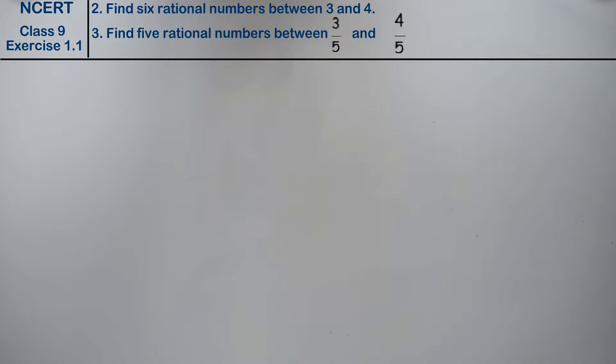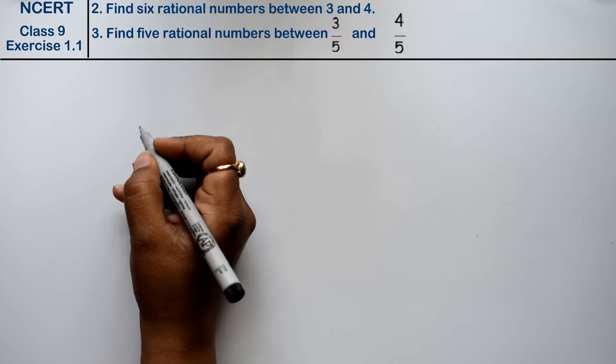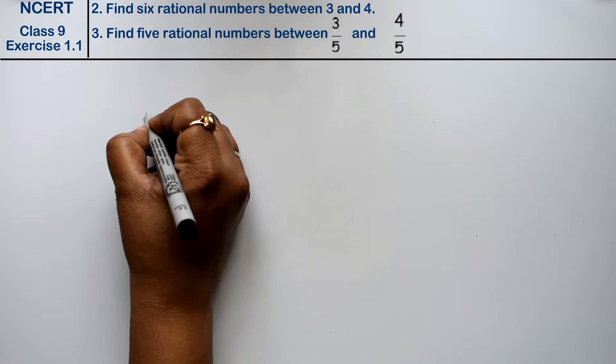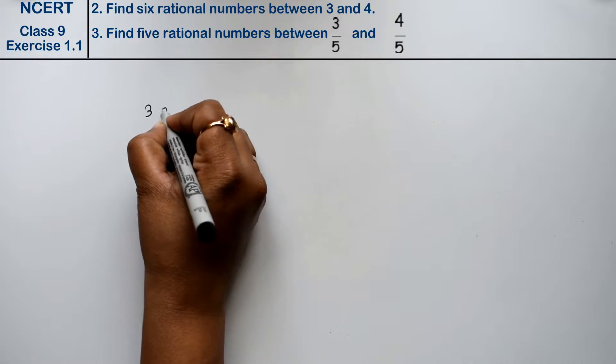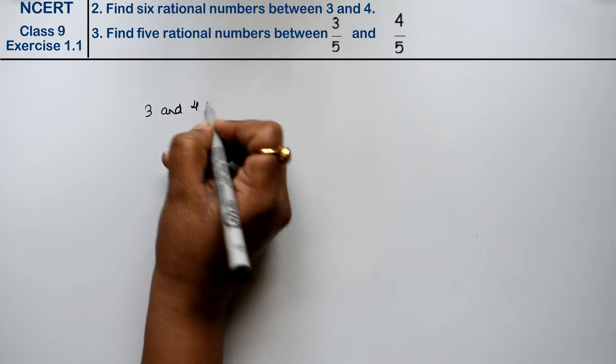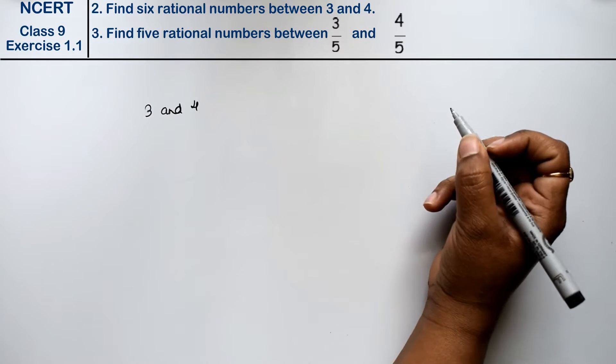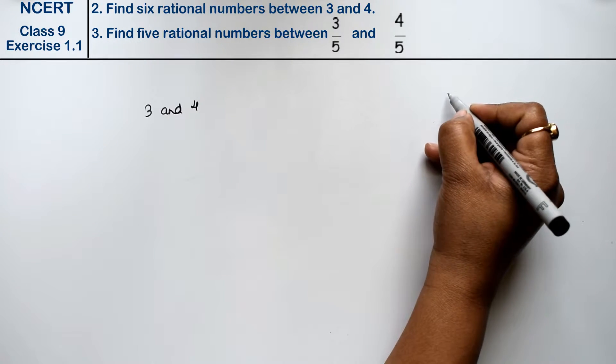Let's do question number 2 of exercise 1.1. Question number 2 is find 6 rational numbers between 3 and 4. Friends, I have shown in my RS Aggarwal solution a formula.